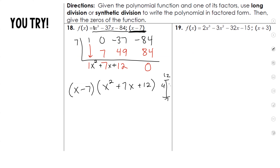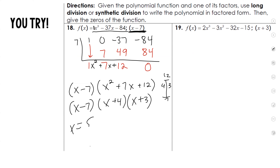I need two numbers that multiply to 12 and add to 7 — that's 4 and 3. So those are your factors. X minus 7 is the factor they gave you. The other ones are x plus 4 and x plus 3. Setting each equal to 0, your zeros will be negative 4, negative 3, and 7.